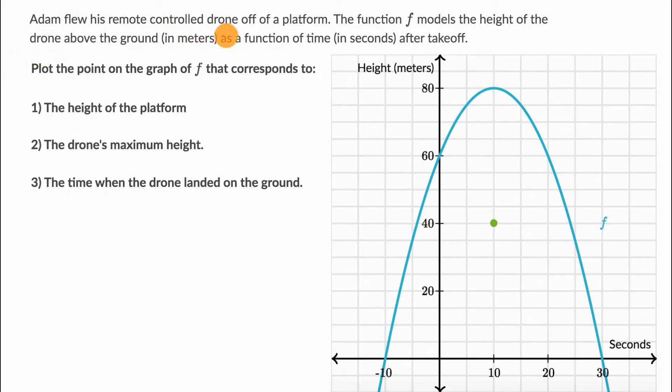We're told that Adam flew his remote controlled drone off of a platform. The function f models the height of the drone above the ground in meters as a function of time in seconds after takeoff.